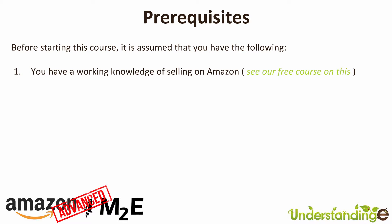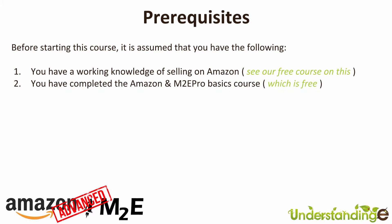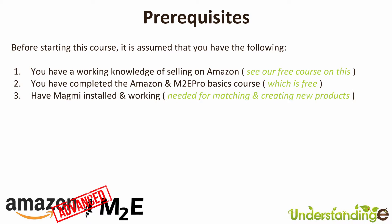You can find the free Amazon course from the Magento Tutorials link at the top of the Understanding E website — it covers Amazon even if you've never sold there before. The next prerequisite is that you have completed the Amazon and M2e Pro Basics course, which is also 100% free on UnderstandingE.com. We recommend you have the basics course completed before starting the advanced course, as there are attributes you'll need in your system that we won't be covering here because we assume you already have them in place.